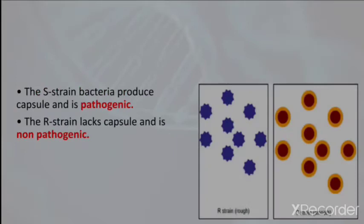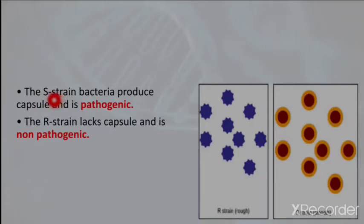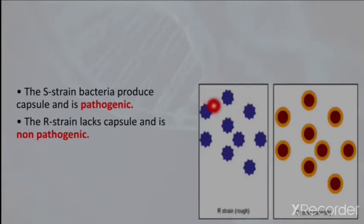The S strain is known as the smooth strain because it contains a polysaccharide covering around it, giving it a smooth polysaccharide layer. It is pathogenic, meaning harmful. The R strain is called the rough strain because it does not contain a smooth polysaccharide layer around it, and for that reason R strain is non-pathogenic — it is not harmful.